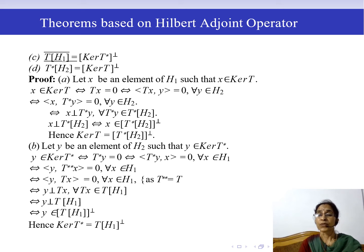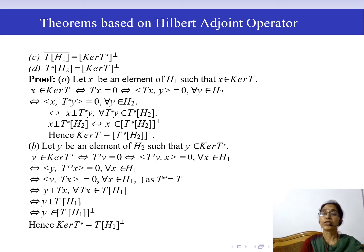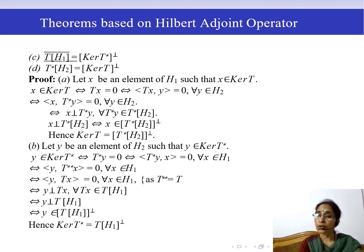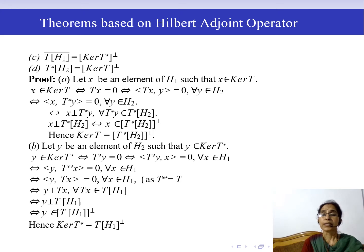For result A, we prove ker(T) = (T*H₂)⊥. Take an element X in H₁ such that X belongs to ker(T). X belongs to ker(T) if and only if Tx = 0, where Tx is an element of H₂. This means the inner product of Tx with every element of H₂ is 0, that is ⟨Tx, y⟩ = 0 for every y in H₂. By definition of the Hilbert adjoint operator, this holds if and only if ⟨x, T*y⟩ = 0 for every y in H₂.